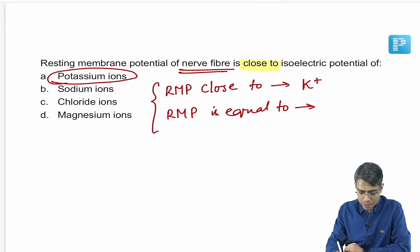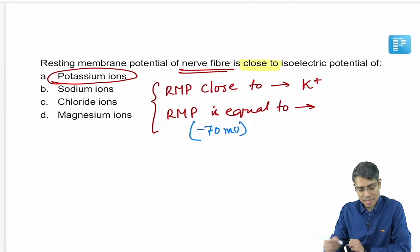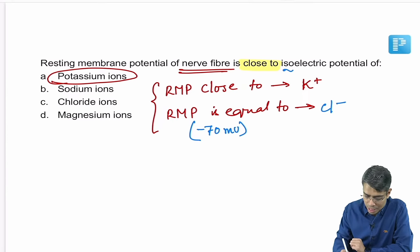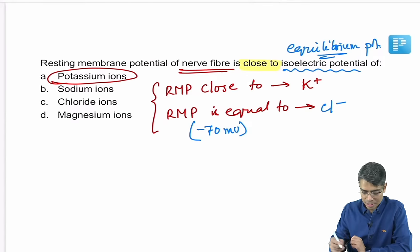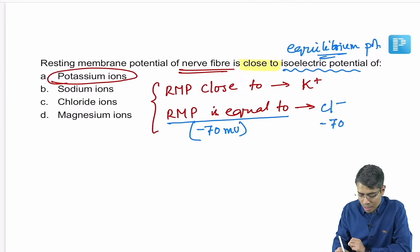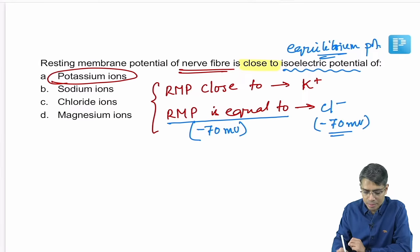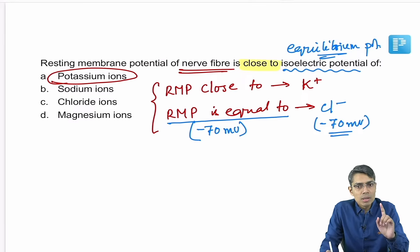The RMP of the neuron is minus 70 millivolts. The equilibrium potential of which ion equals minus 70 millivolts? The answer is chloride. Isoelectric potential is also known as equilibrium potential. So if the question asks which ion's equilibrium potential equals RMP of neuron, the answer is chloride.